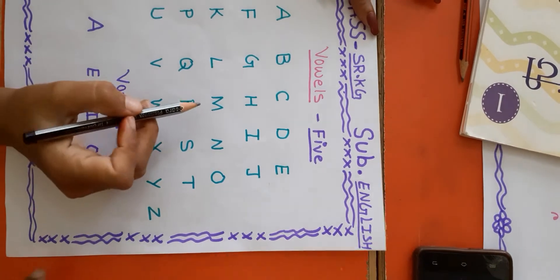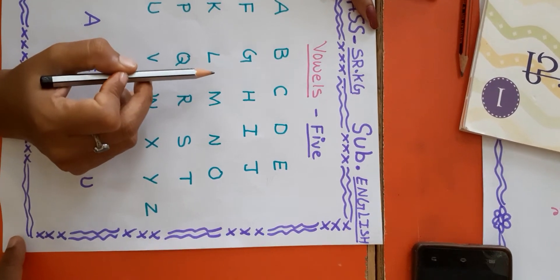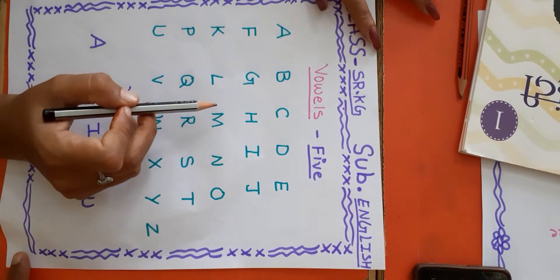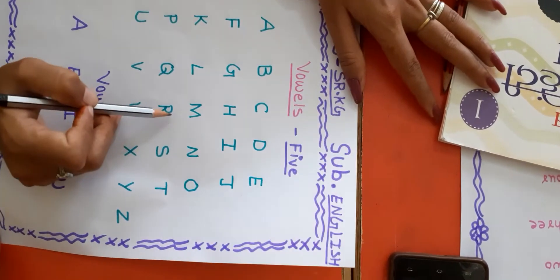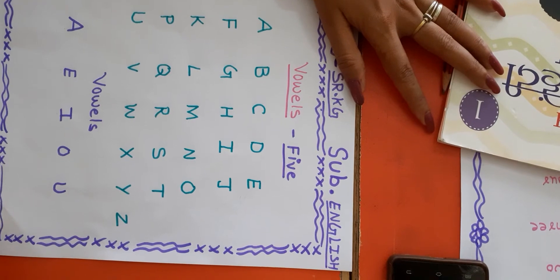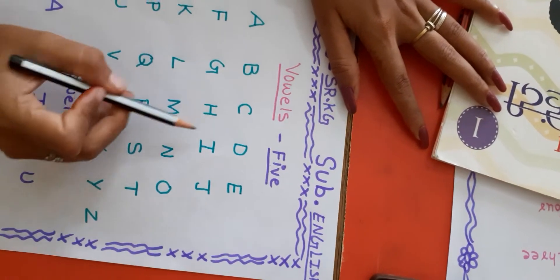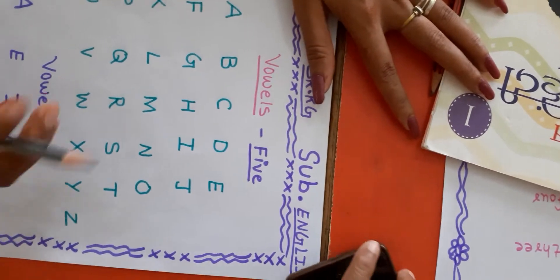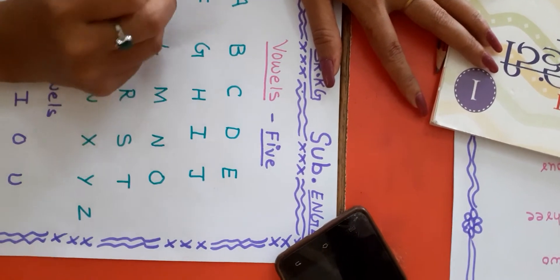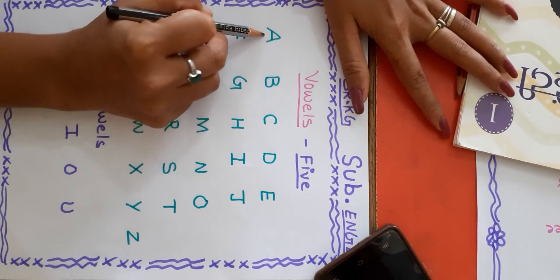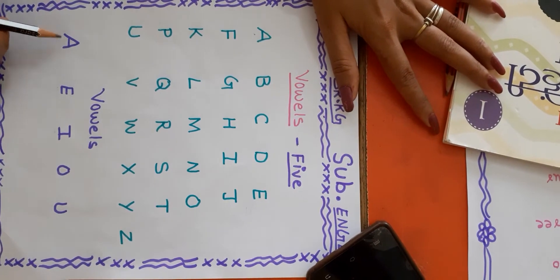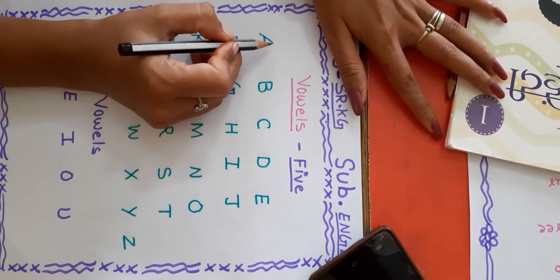There are some letters. Find the vowels in this letter. Now find A. Now circle vowels.